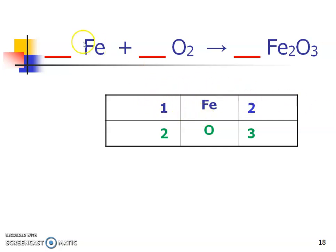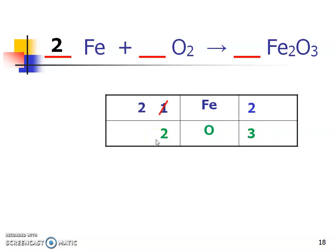Let's start with iron. I'm going to put a two here and cross off the one to put a two there — now I have two irons on both sides. But let's look at the oxygen — this is what I mean by the lowest common multiple. There's no number multiplied by two to give me the three I need, and there's no number multiplied by three to give me the two I need. So the lowest common multiple between two and three is six. Two times three gives six, and three times two also gives six. Most of the time, the lowest common multiple will be those two numbers multiplied together.